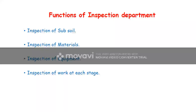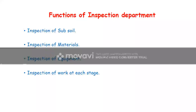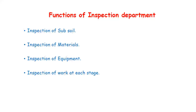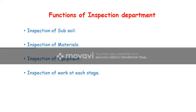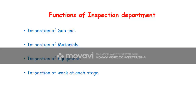The functions of the inspection department include: inspection of subsoil, inspection of materials, inspection of equipment, and inspection of work at each stage. Inspection of subsoil involves, before construction starts, inspecting whether for the foundation work there is hard strata or soft strata present. Depending upon that, they design the foundation and then proceed with the structural design.